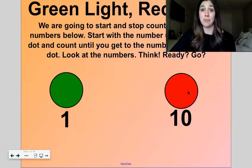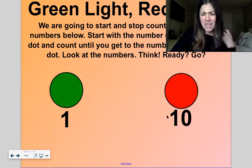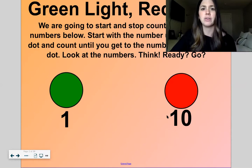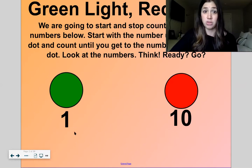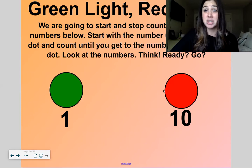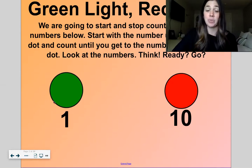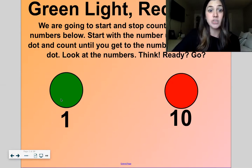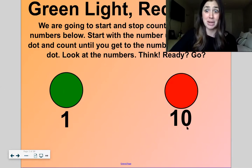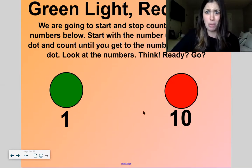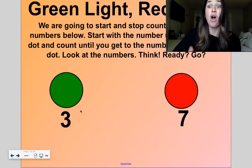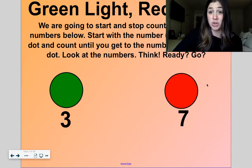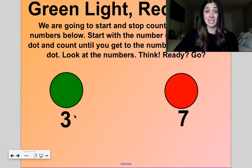So this is called Green Light, Red Light. We're going to start and stop counting using numbers below. I think we played this a while ago in one of our earlier lessons. So you're going to start with a number under the green dot and count until we get to the number under the red dot. Look at the numbers. So here we would start counting at one and stop counting at 10, but you guys are already really good at counting from one through 10. So let's start at a number other than one. So let's start at three and stop at seven.